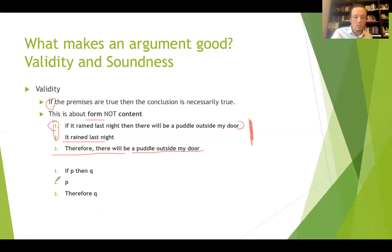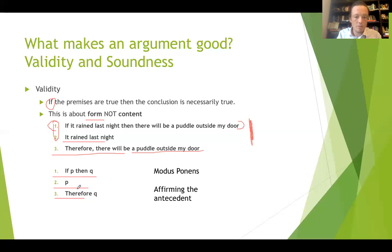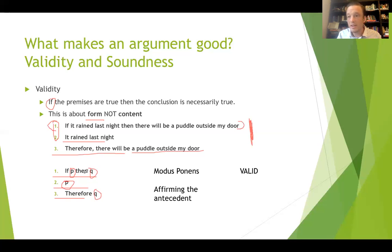This argument follows a pretty common form of valid argumentation called modus ponens, also known as affirming the antecedent. We're going to talk about various forms of arguments in a different lecture. But it's sort of like word math — it doesn't really matter what takes the place of the variables. If we see this form, we know it's a valid form.